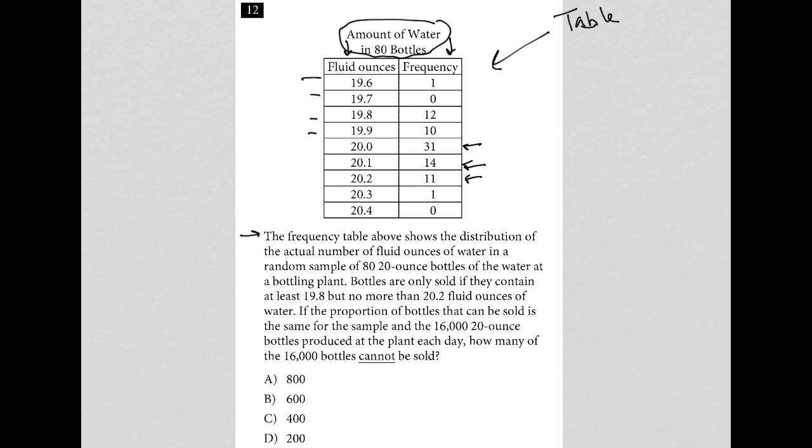The frequency table above shows the distribution of the actual number of fluid ounces of water in a random sample of 80 20-ounce bottles of the water at a bottling plant. So we can see that some of them are a little below. Some of them are right at the 20 as advertised. And a few of them are actually a little bit above the 20 ounces. The bottles are only sold if they contain at least 19.8, but no more than 20.2. So that's our range.